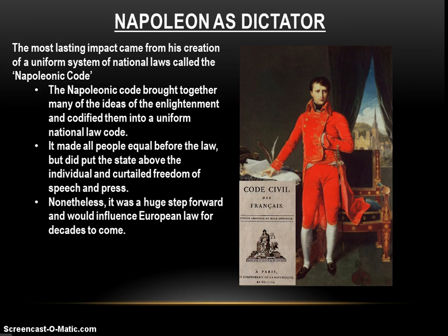The Napoleonic Code brought together many ideas of the Enlightenment and codified them into a uniform national law system — natural rights, liberties, freedoms, equality before the law, and advancement in society based on merit instead of birth. In reality, it did limit some freedom of speech and press, but this was still a dictatorship. The French recognized Napoleon as a dictator but also saw him as a hero who had liberated them from the Directory and brought stability and peace back to France — so they were willing to look beyond that.